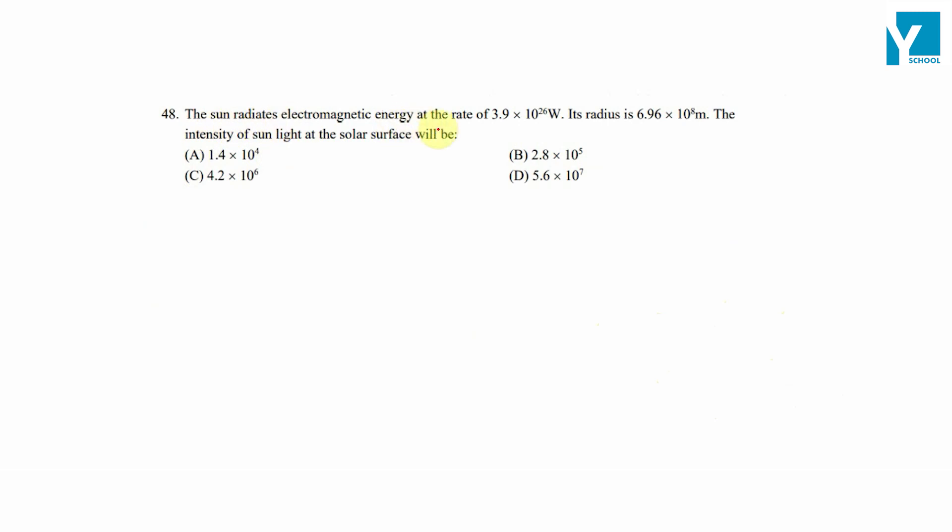If the Sun radiates electromagnetic energy at a rate of 3.9 × 10^26 watts, and its radius is 6.96 × 10^8 meters, the intensity of the Sun's light at the solar surface will be what? The question is asking about this radiation rate and radius.